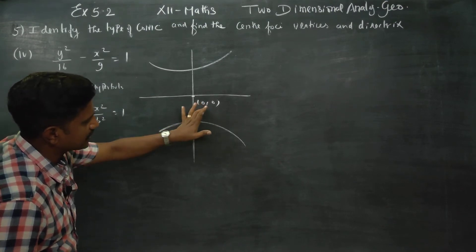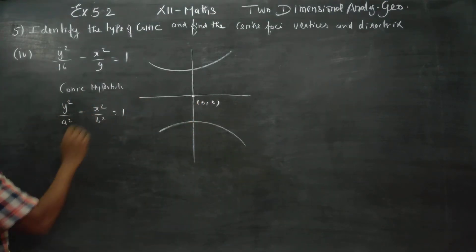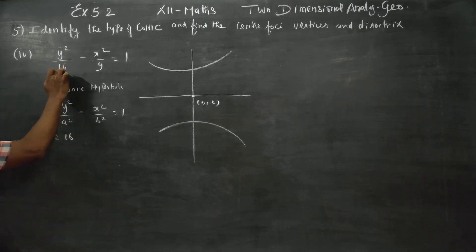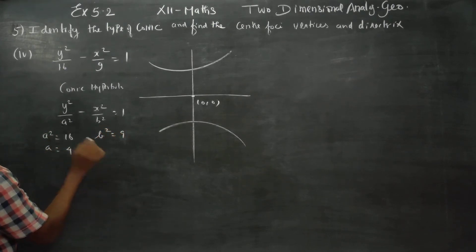Center is H, K. For this simple formula with H, K equal to zero. What is a square? A square is the positive number, 16. So a is equal to root of that, which is 4. B square equal to 9.